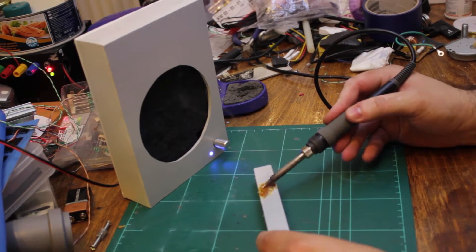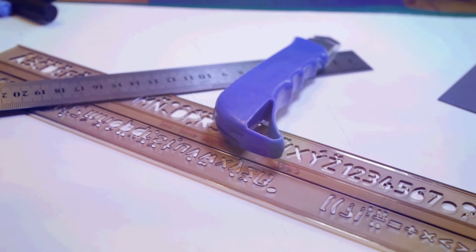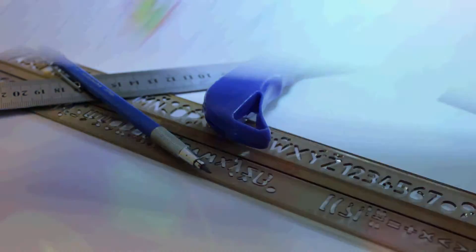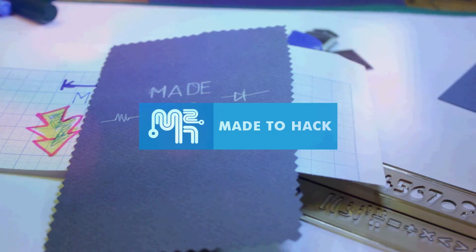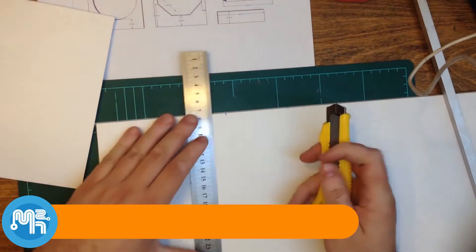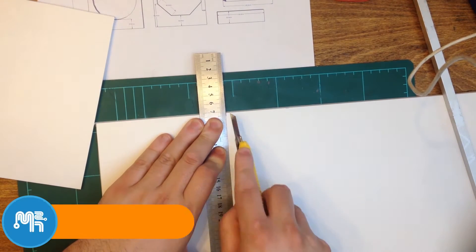Today on Made to Hack, Part 2 of making solder fume extractors. I begin by cutting 3mm thick PVC plastic sheets into the proper dimensions to make the box.